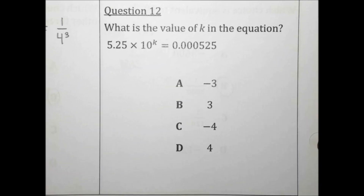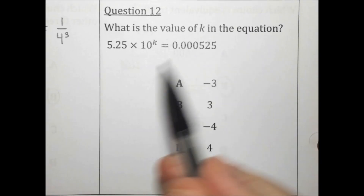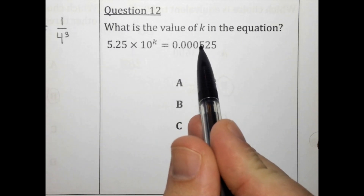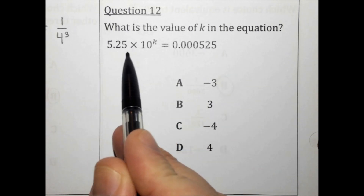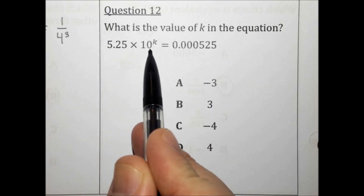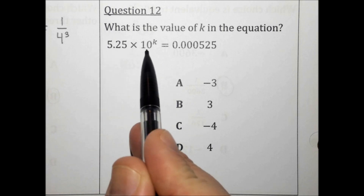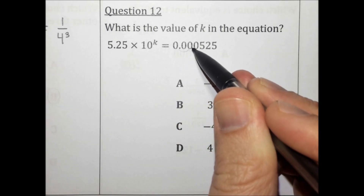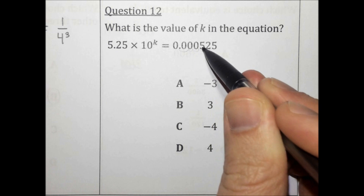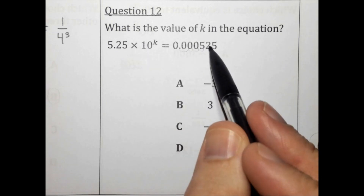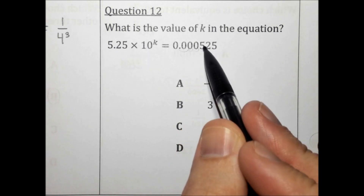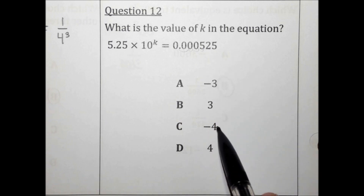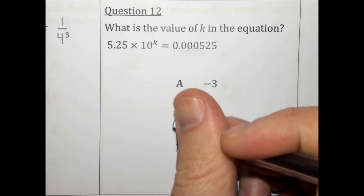What is the value of K in the equation? These two numbers are the same — one is in standard notation and one is in scientific notation. So we just need to figure out how far the decimal moved: 1, 2, 3, 4 times. And since the original number was a very small number, the exponent is negative. The answer is C.